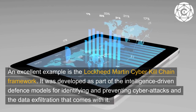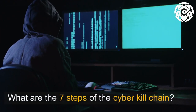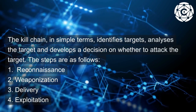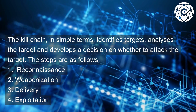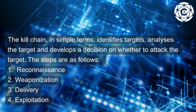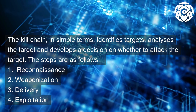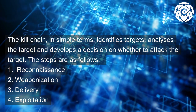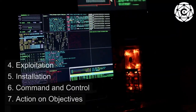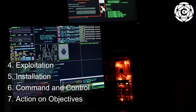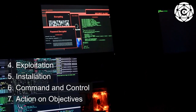What are the seven steps of the cyber kill chain? The kill chain identifies targets, analyzes the target, and develops a decision on whether to attack. The steps are: 1. Reconnaissance, 2. Weaponization, 3. Delivery, 4. Exploitation, 5. Installation, 6. Command and Control, 7. Action on Objectives.